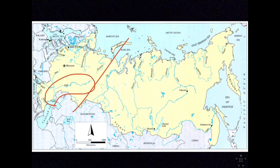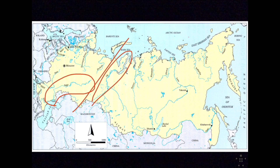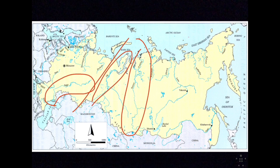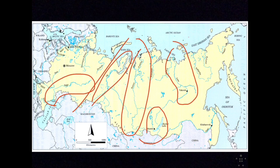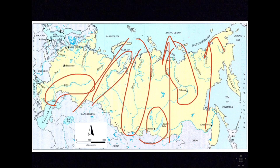East of the Ural Mountains, you have Siberia. Siberia has some important rivers: the Ob, the Yenisei River, the Lena River, and also the Irtysh River running through the region of Irkutsk, which is influential to Siberia. These Siberian rivers flow north through Siberia to the Arctic Ocean.